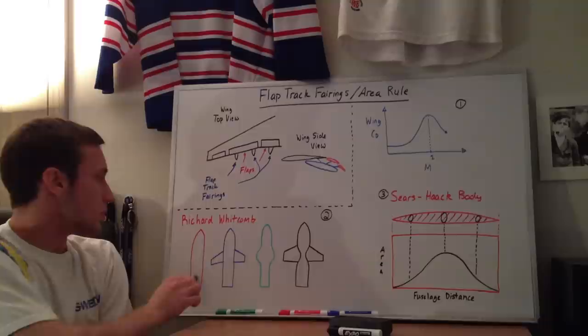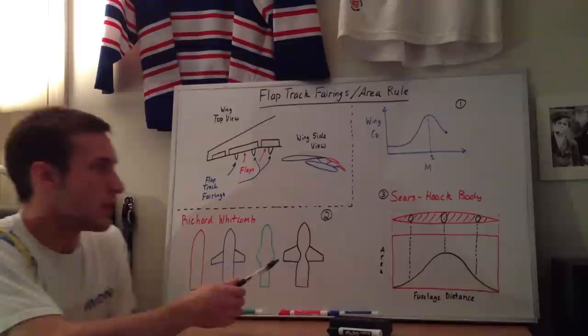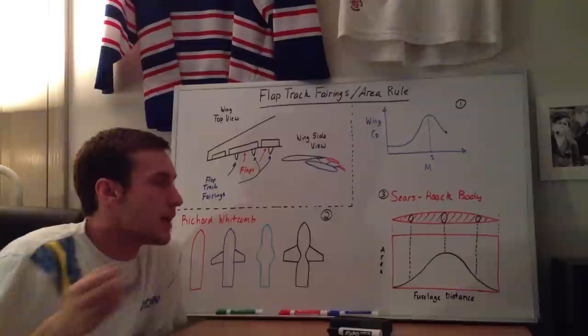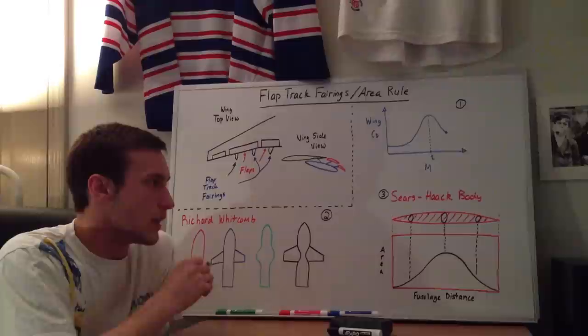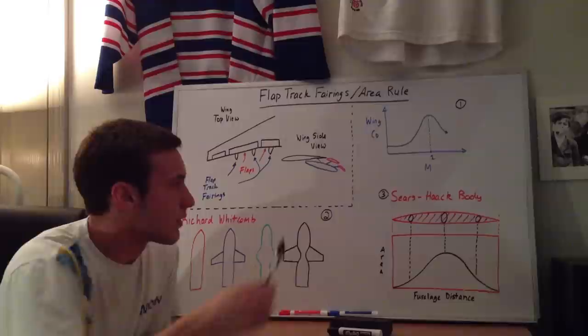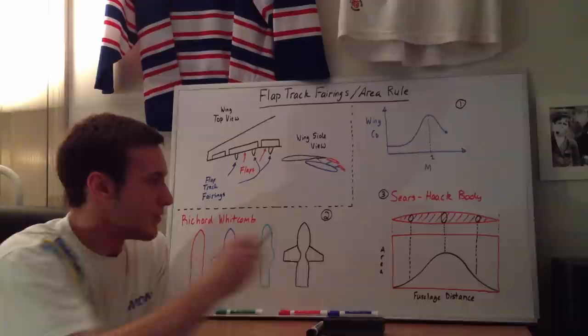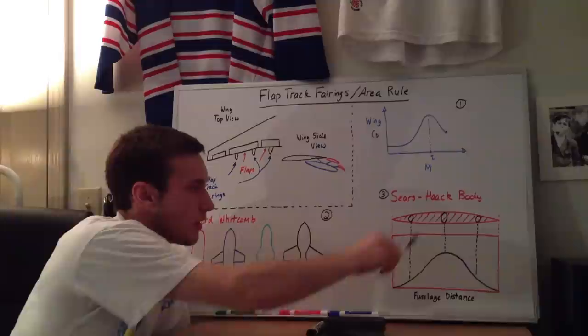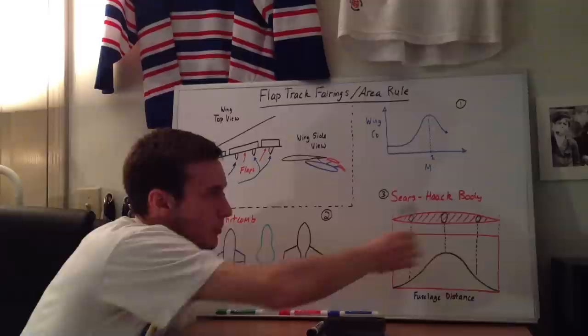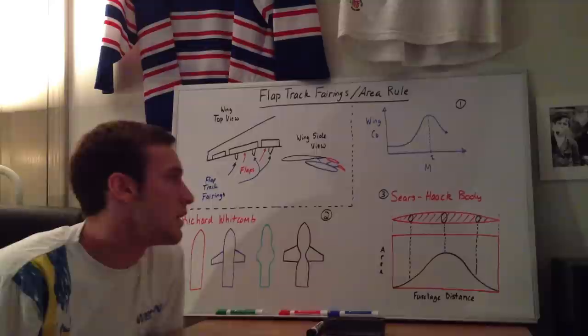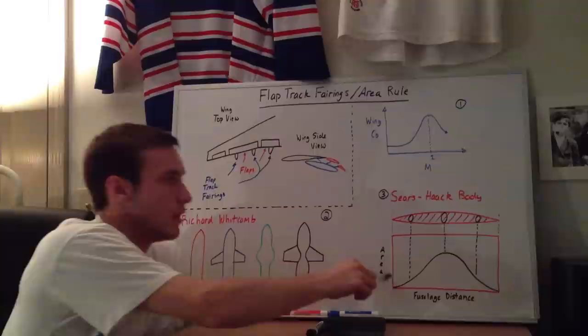The Sears-Haack body is important because it's the shape that has the lowest wave drag for its size along its length — it looks kind of like a cigar. This is a plot of the cross-sectional area versus the fuselage distance, or fuselage station. As you can see, there's no area at the tip because it's just a point. The area smoothly increases up to a maximum at the middle, then decreases again, and it's symmetrical about the centerline. So when you're designing a plane, you want the area or volume distribution to look like the Sears-Haack body.